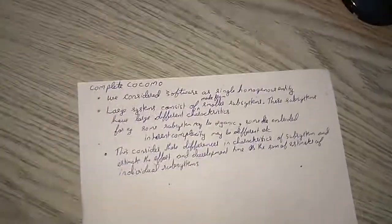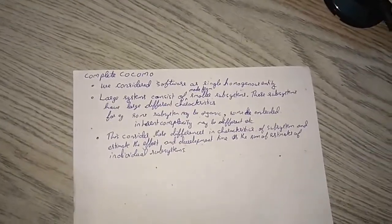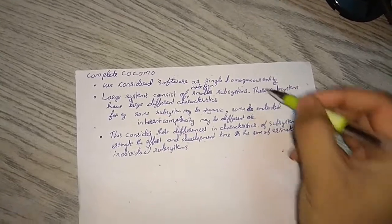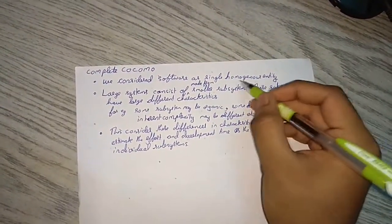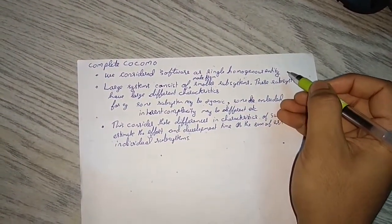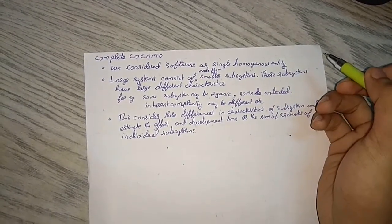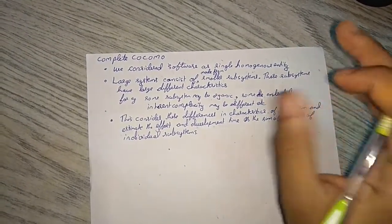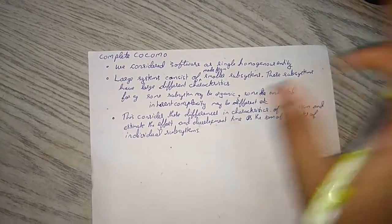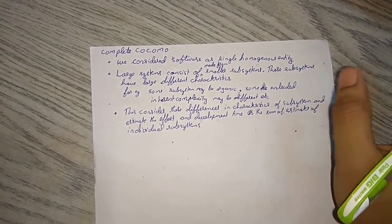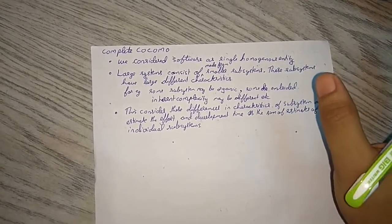We have another complete COCO model. In the previous two models we considered it as a homogeneous entity. That means if one person is experienced, then all persons are experienced. That's what we thought.